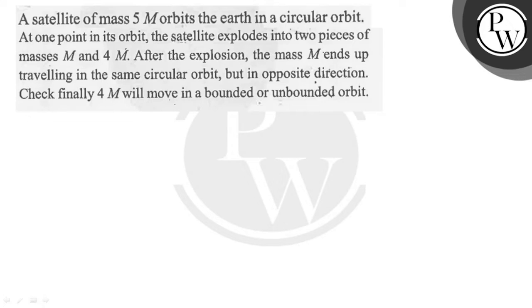The question is: a satellite of mass 5m orbits the earth in a circular orbit. At one point in its orbit, the satellite explodes into two pieces of masses m and 4m. After the explosion, the mass m ends up traveling in the same circular orbit but in opposite direction. Check: finally, 4m will move in a bounded or unbounded orbit.